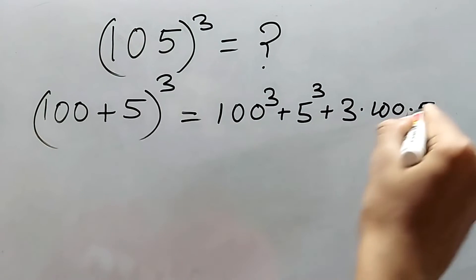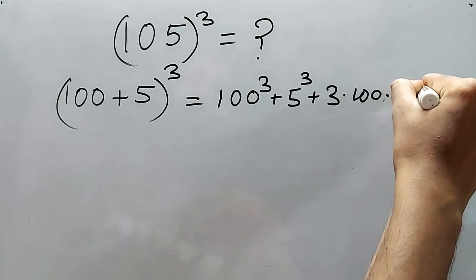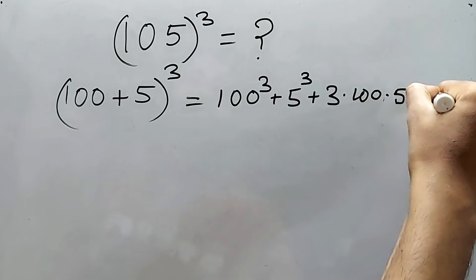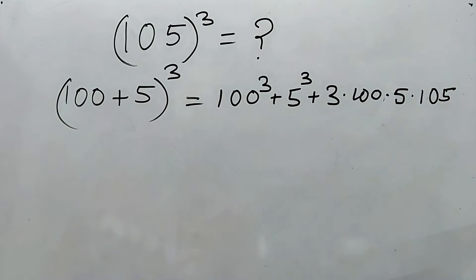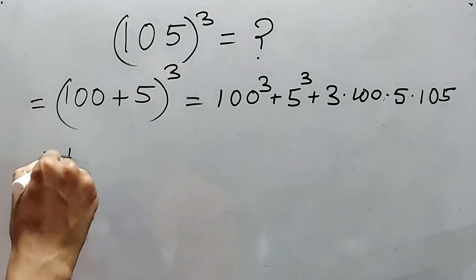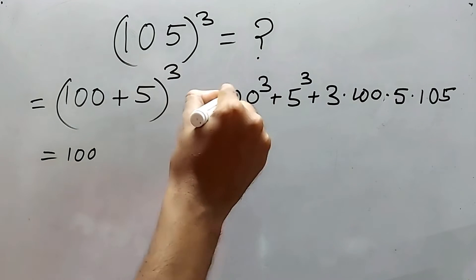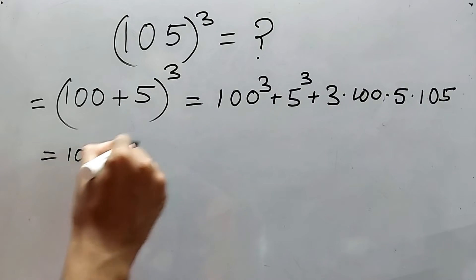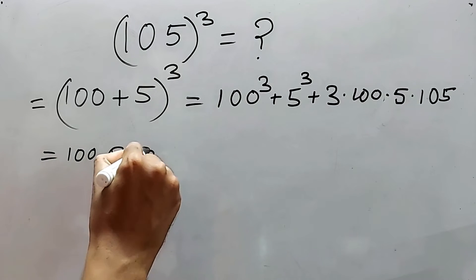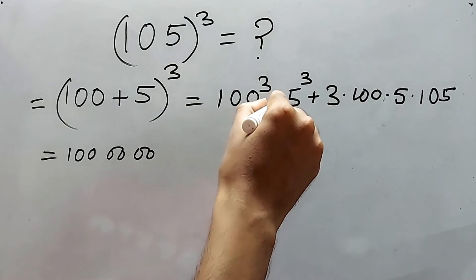105 into 105 into 105. Sorry for the writing. Now we know this value. 100 cube means 100 then double zero and then double zero, right? Easy answer. 5 cube is 125.